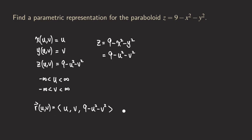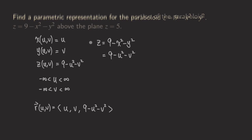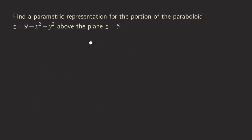Now we are going to do a similar problem. This time we are going to parametrize a portion of the paraboloid, which is different from the previous one. We need to think a little bit more because this time we are really just parametrizing a portion of the paraboloid, not the whole thing — specifically the portion that is above the plane z equals 5.